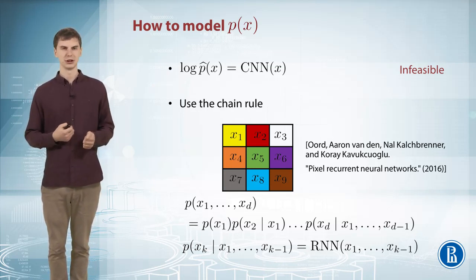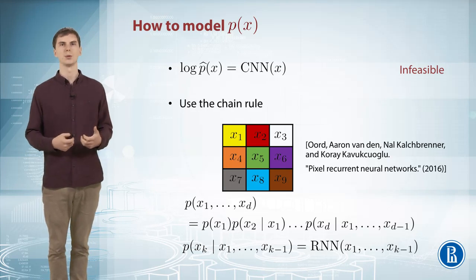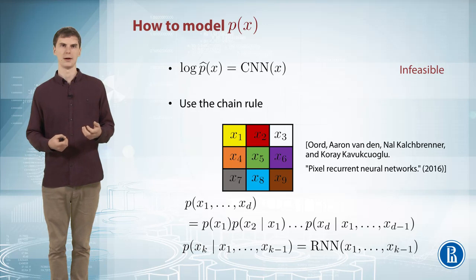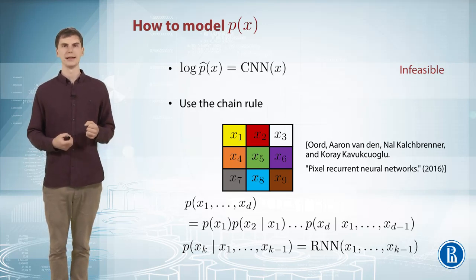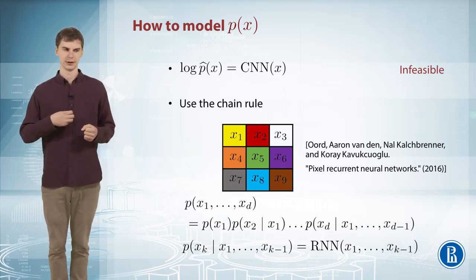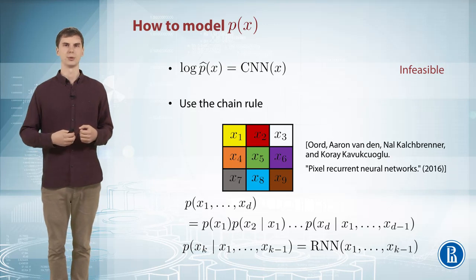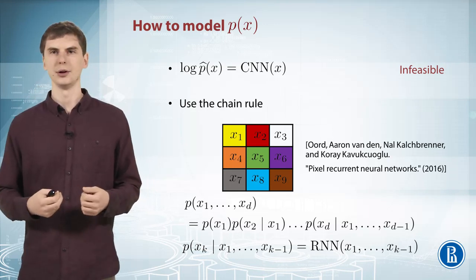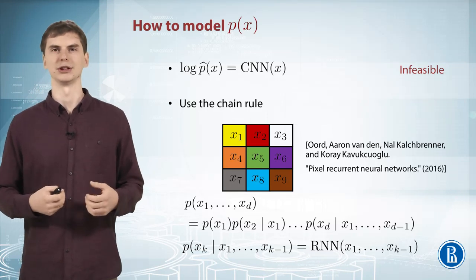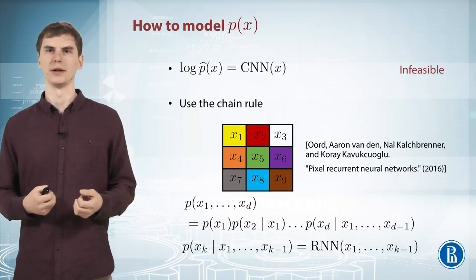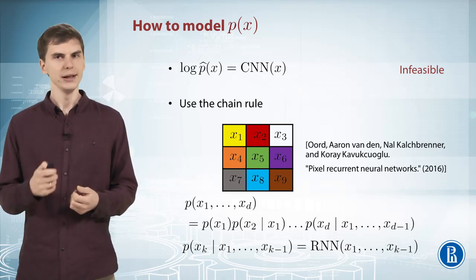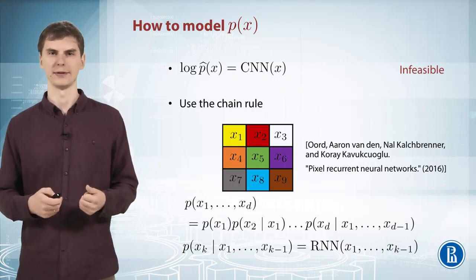This approach makes modeling much easier because now the normalization constant has to consider only one-dimensional distribution. If your image is grayscale, each pixel can be decoded with a number from 0 to 255, the brightness level. Then your normalization constant can be computed by summing over all these 256 values. It's easy. It's a really nice approach. Check it out if you have time.